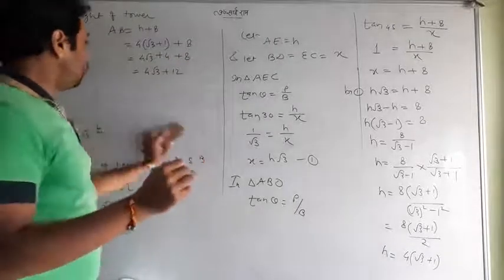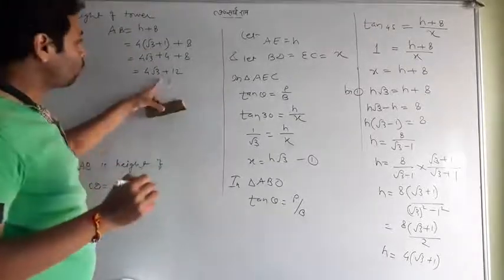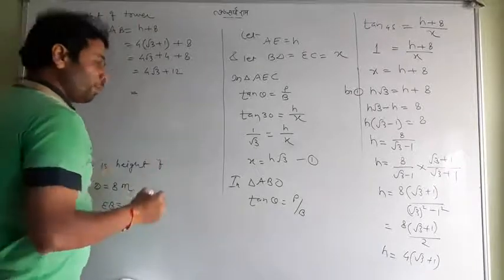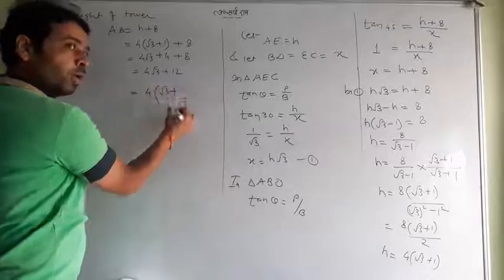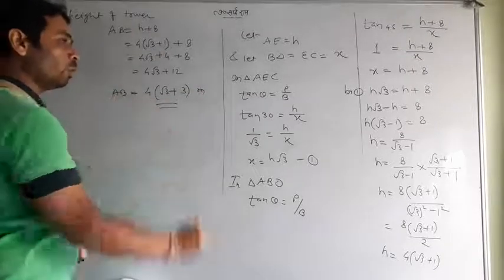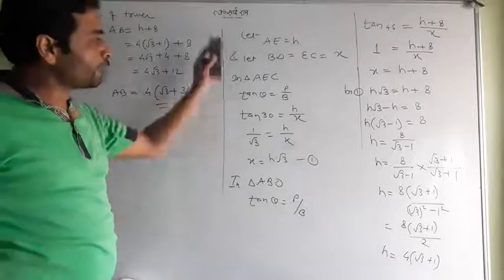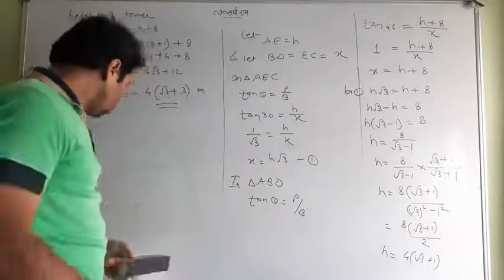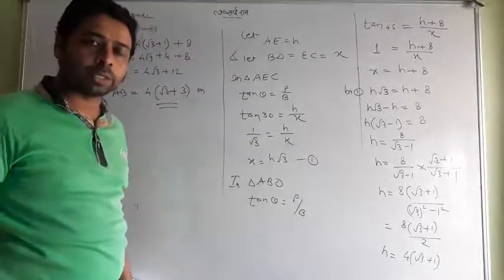So we have 4√3 + 12. You can also take out 4 as a common factor: 4(√3 + 3) meters. This is the height of the multi-story building. So that was our working — the question is actually quite manageable. Students, now try Exercise 9.1 on your own. Tomorrow we will solve some questions from that exercise. Thank you.